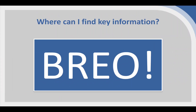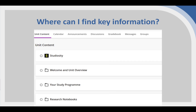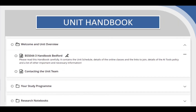In terms of where you can find key information on the unit, the short answer is always going to be Brio, and in particular the unit handbook. You can find the unit handbook on Brio under the welcome and unit overview folder. There is a separate handbook for every location — Bedford, OCB, Birmingham, London, or Milton Keynes — because it has details of your specific classes, rooms, your tutors and so on.